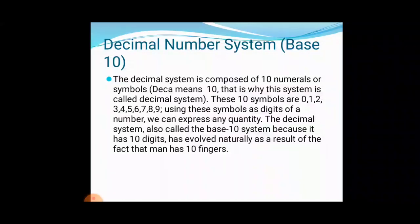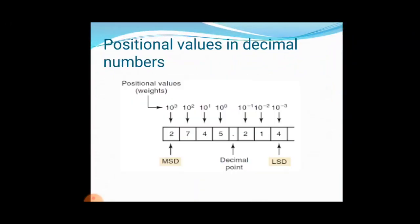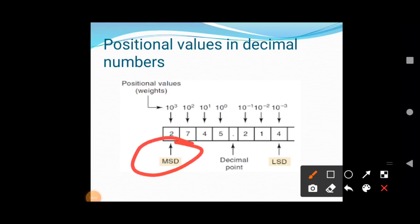Using these symbols as digits of a number, we can express any quantity. The decimal system also called the base 10 system because it has 10 digits. The base has evolved naturally as a result of the fact that man has 10 fingers. What happens in position value? First, MSD. What is the full form of MSD? This is the most significant digit. LSD means least significant digit. This is the decimal point. The decimal system is a positional value system in which the value of digits depends on its position.